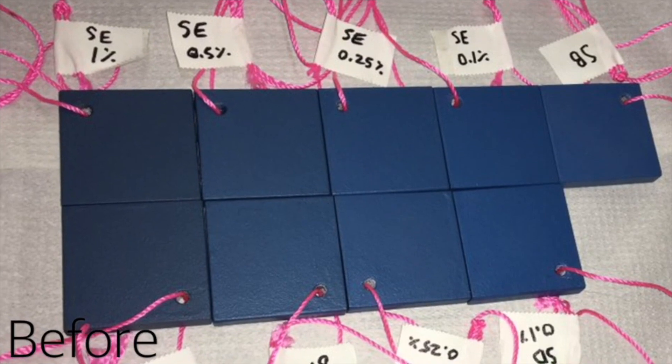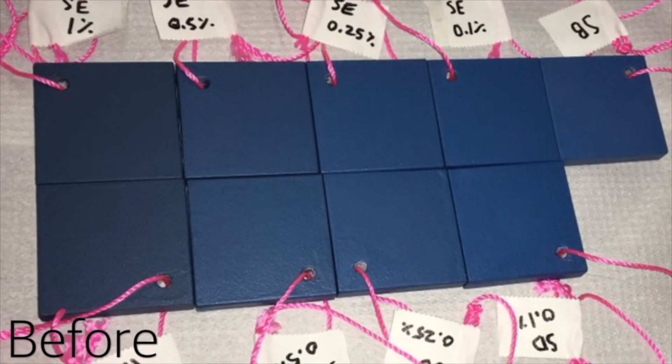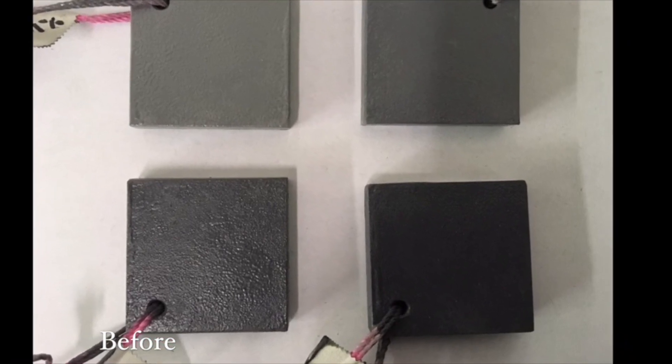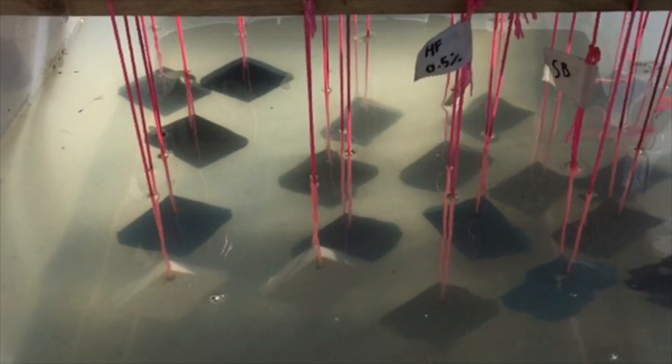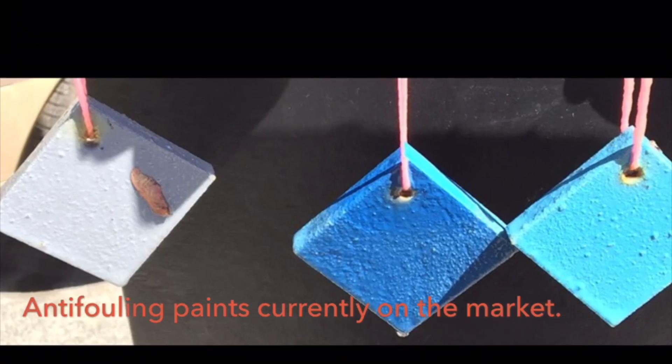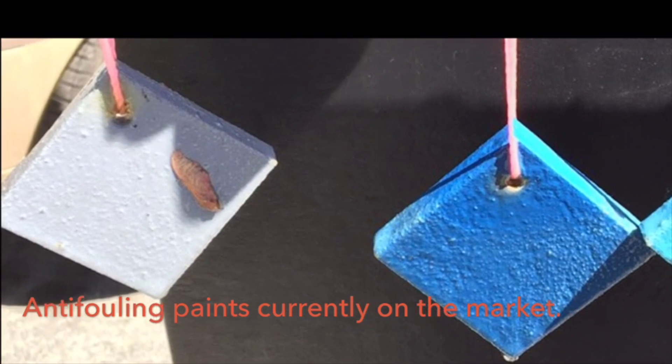Various coatings and graphene contents were tested in controlled situations to compare growth. The different colours indicate different products. The different shades indicate graphene content. These tests show the accumulation of growth and corrosion on the samples.